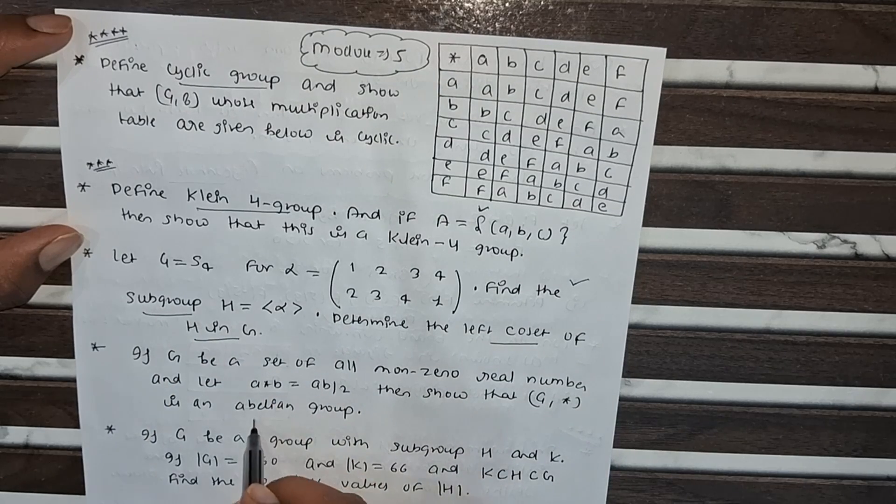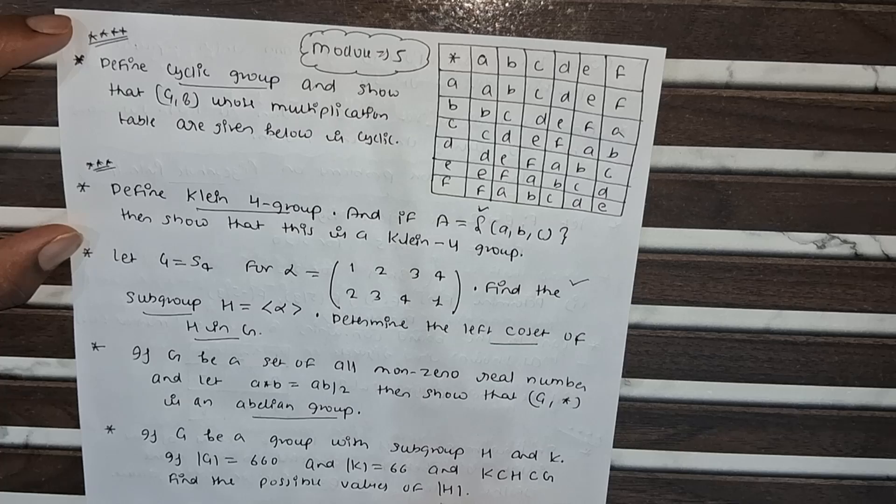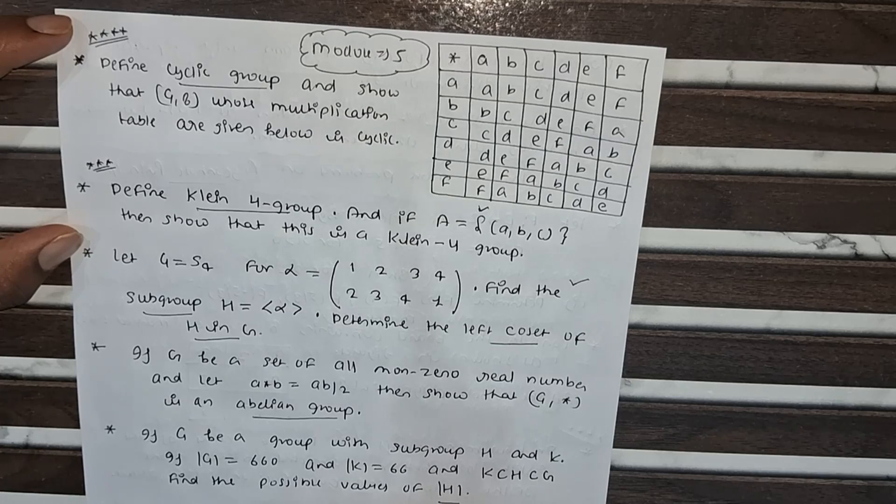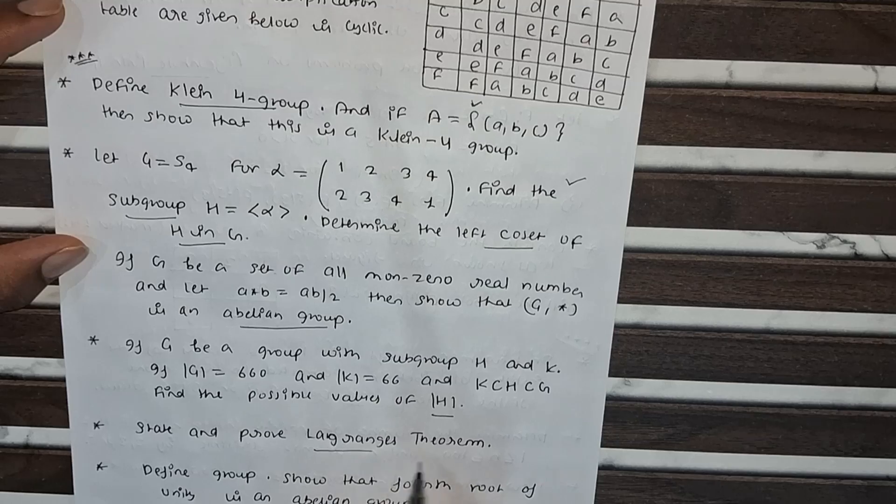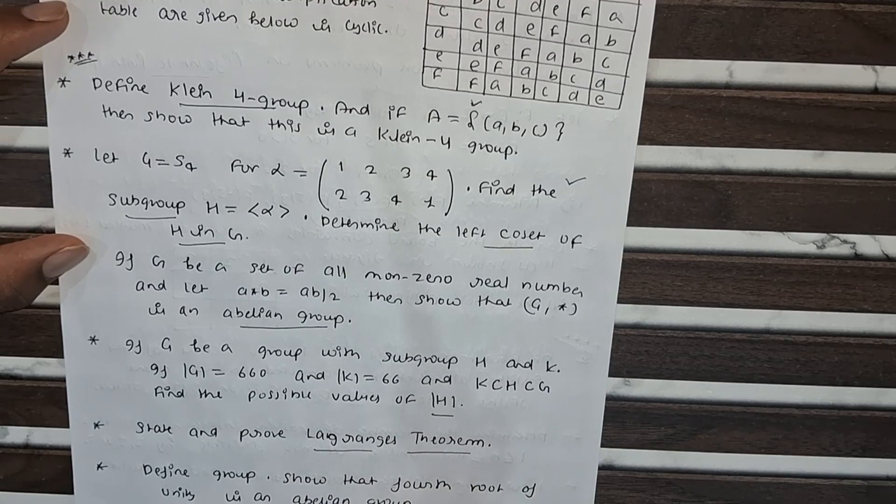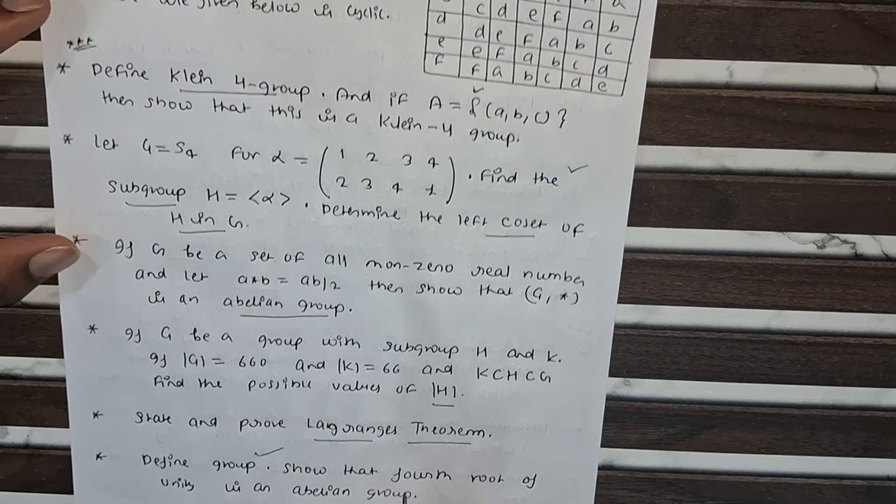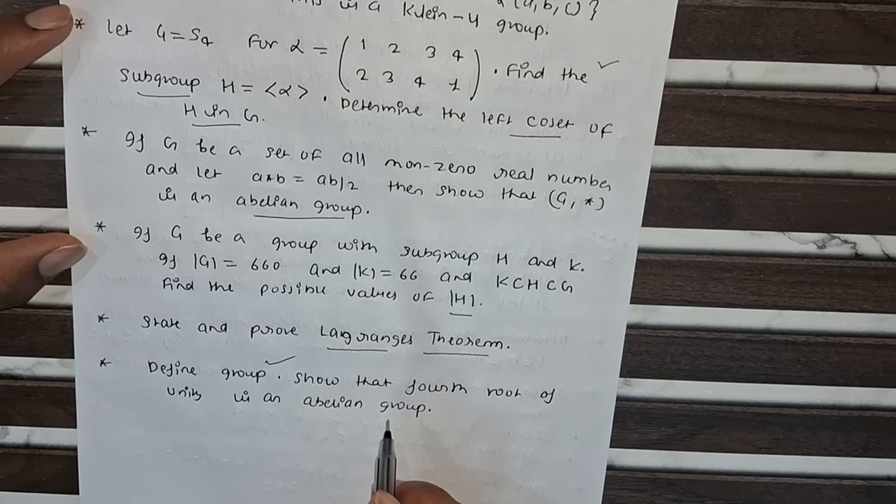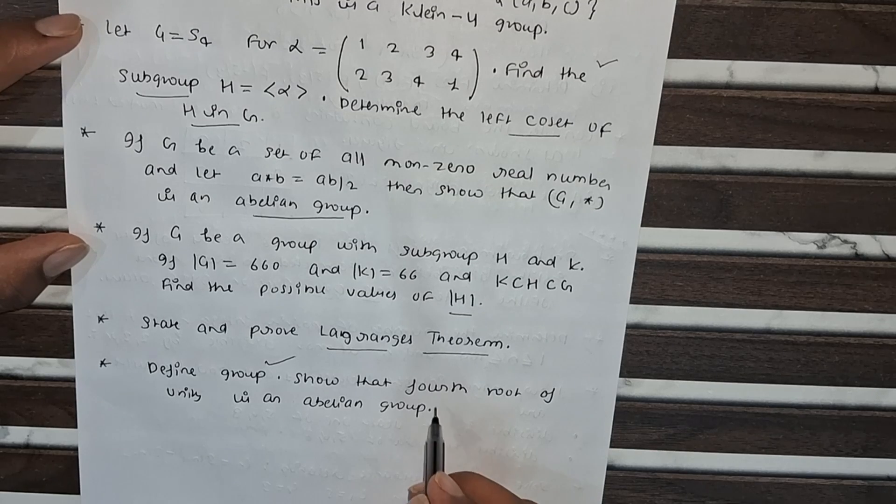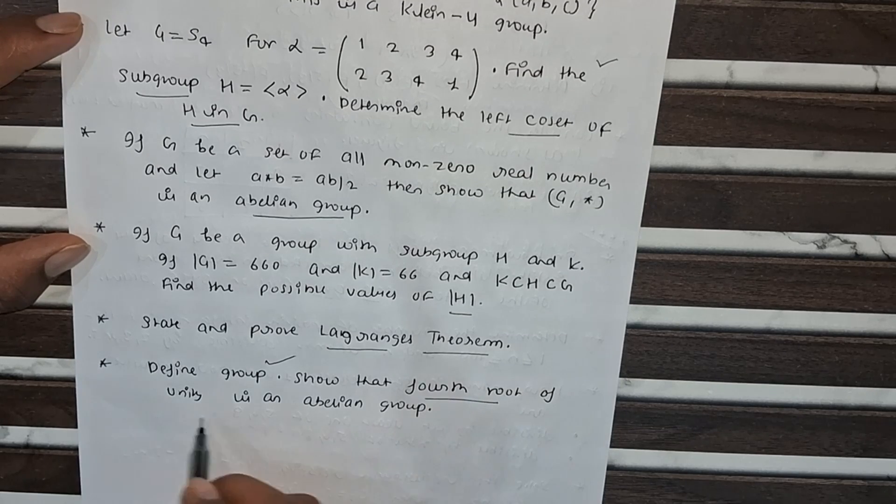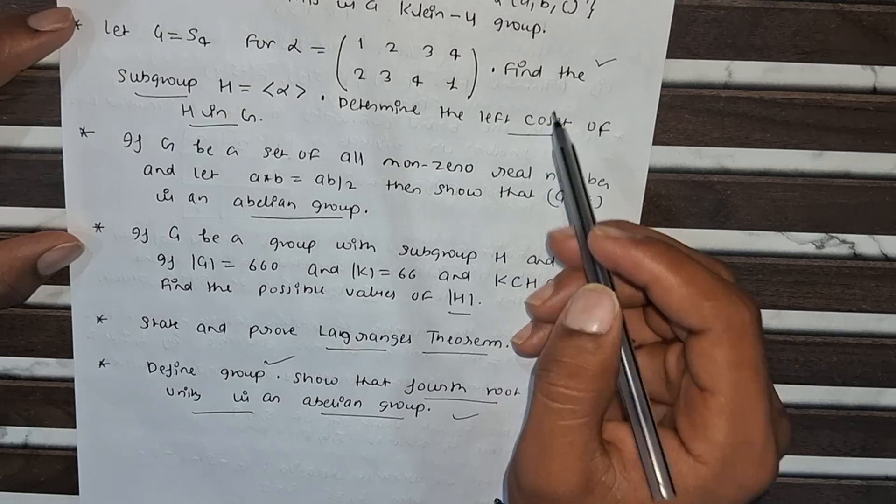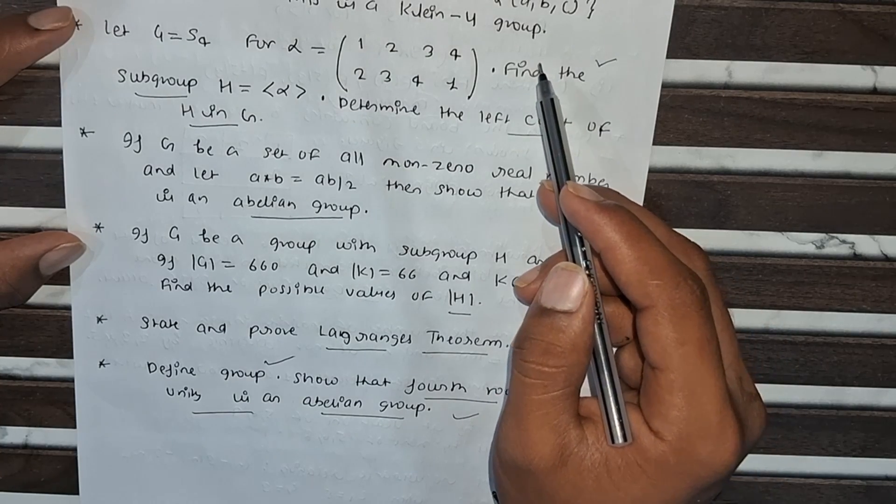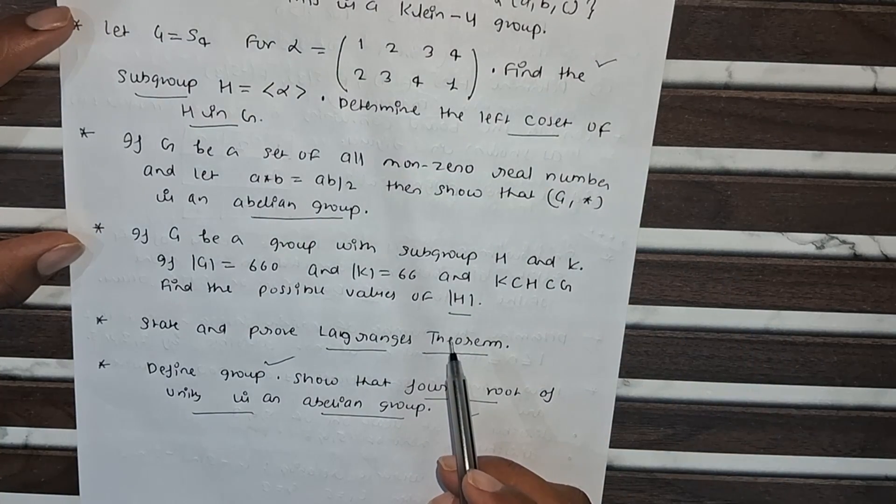Abelian groups are an important topic. This is a problem on subgroups. Lagrange's theorem is important - you have to read it. Many problems on groups are in the textbook, so go and solve them. One more problem is fourth roots of unity in Abelian groups. You can access all video solutions of these problems on my YouTube channel. Thank you.